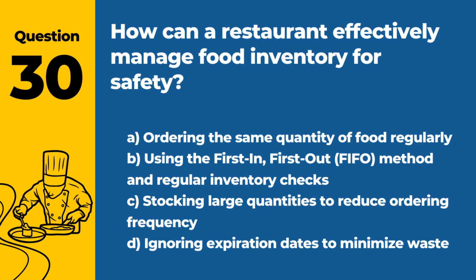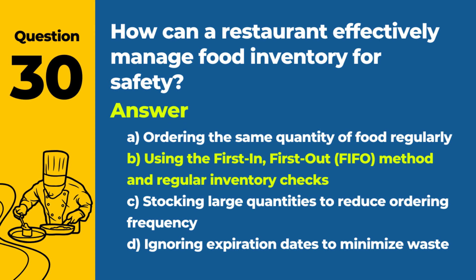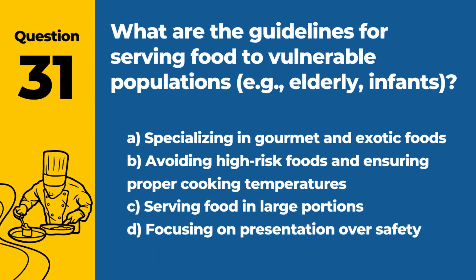Question 30: How can a restaurant effectively manage food inventory for safety? a. Ordering the same quantity of food regularly. b. Using the first in, first out (FIFO) method and regular inventory checks. c. Stocking large quantities to reduce ordering frequency. d. Ignoring expiration dates to minimize waste. Answer: b. Effective management of food inventory for safety involves using the FIFO method and conducting regular inventory checks to ensure freshness and reduce the risk of serving spoiled food.